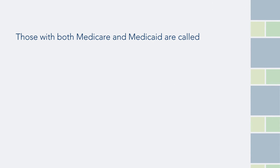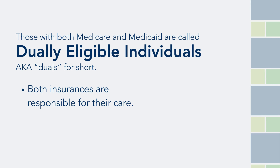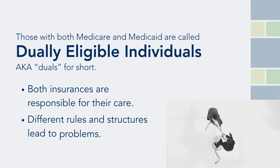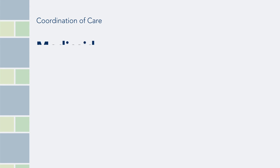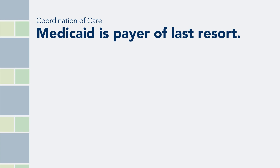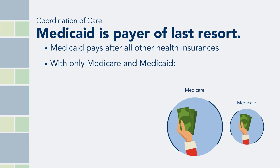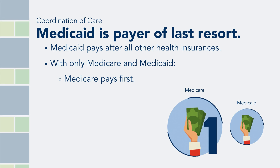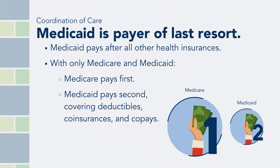When someone has both Medicare and Medicaid, they are called dually eligible individuals, or sometimes DUALS for short. Both insurances are responsible for paying for their care, but because they have different rules and structures, this can lead to problems. Medicaid law requires Medicaid to be the payer of last resort, meaning that Medicaid pays after all other health insurance has paid. When someone has only Medicare and Medicaid, Medicare pays first and Medicaid pays second, covering the deductibles, co-insurances, and co-pays that people with Medicare are otherwise responsible for.